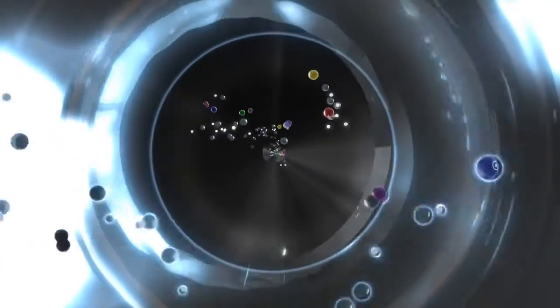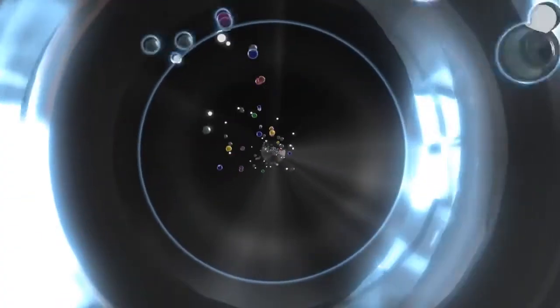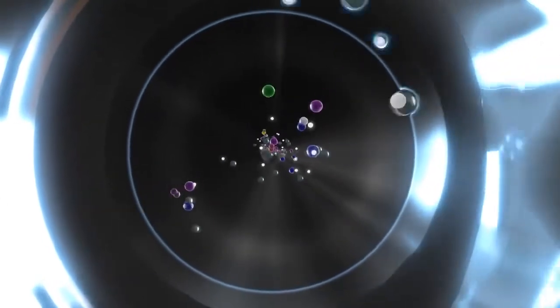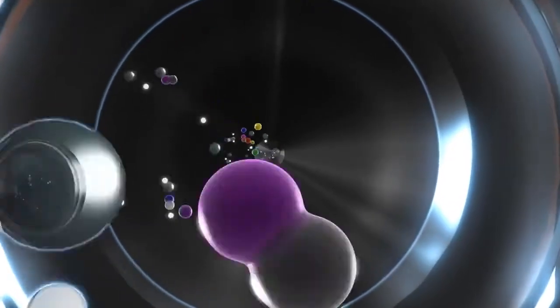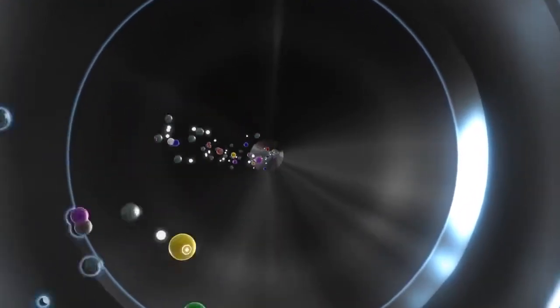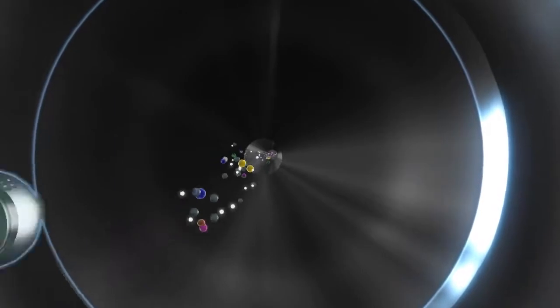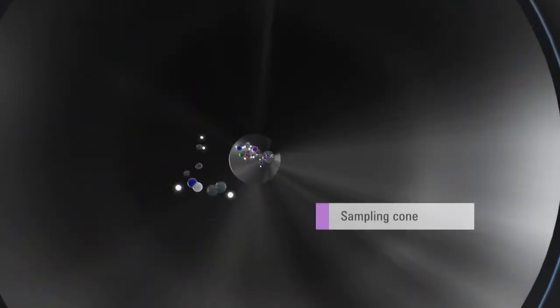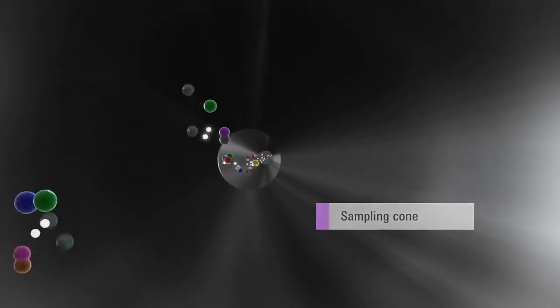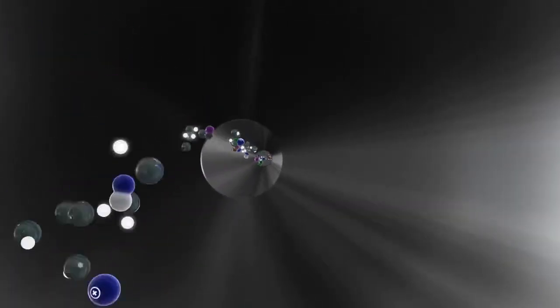The ions generated in the plasma are extracted into the high vacuum region through the two interface cones. The unique design of the 7700 interface combines exceptional matrix tolerance and high sensitivity across the mass range. The interface cones are O-ring free and both are held in place using thread mounts, so no screws need to be removed for routine maintenance.